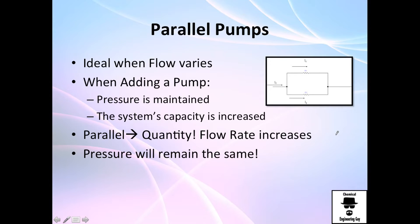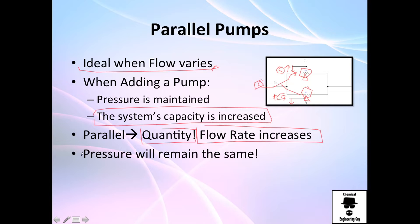So let's talk a little bit on parallel arrangement. It's ideal when the flow varies, so if you're changing, you can always increase or decrease the flow rate because you're going to split it, so the load is relatively lower in general. The pressure is maintained, and the system capacity is increased. What do we mean with system capacity? This means that the quantity or flow rate increases, and pressure will remain the same.